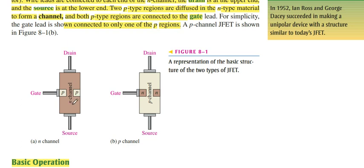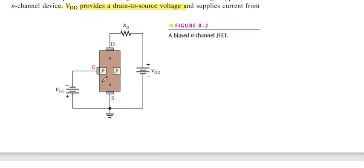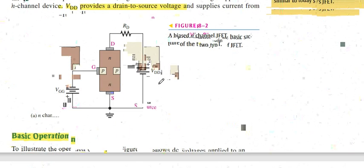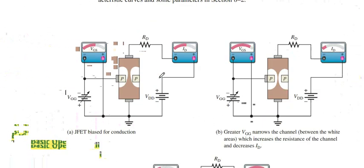This is n-channel, this is p-channel. The basic operation is we connect gate and source with the voltage supply of reverse bias. On the other hand, we connect drain and source through the resistance. Gate and source voltage is VGG and drain and source voltage is VDD. How to operate it? Let's see this diagram.